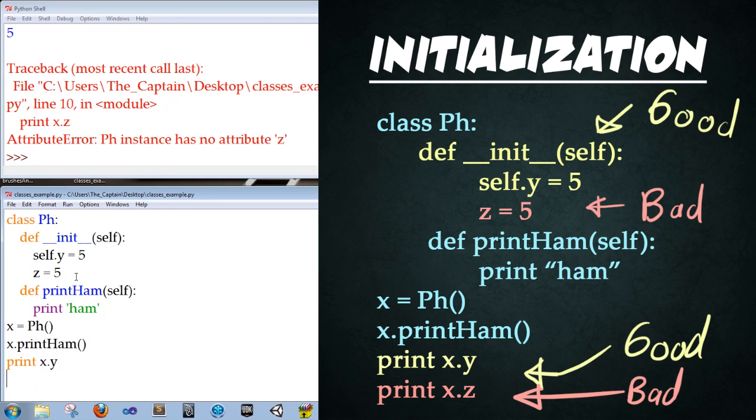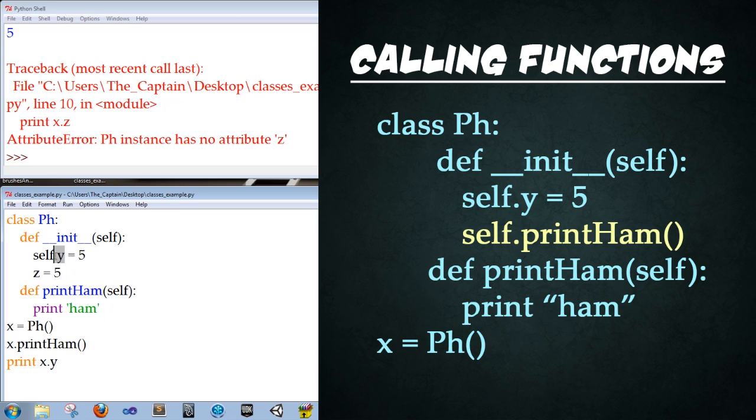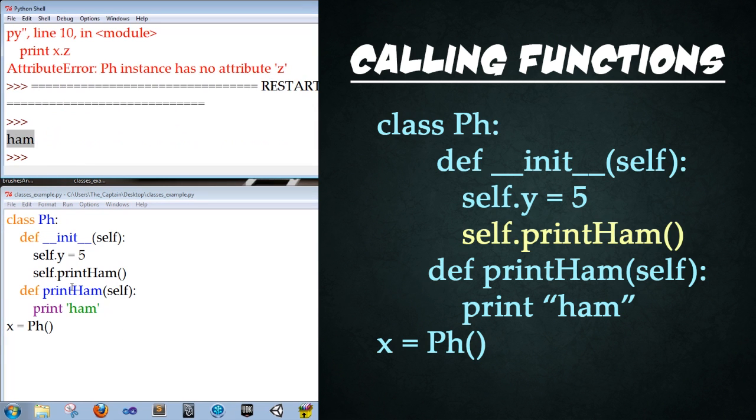So what if we wanted to access functions within other functions? Well, it's very simple. Just the same way that we can access variables within the class, we can access functions. So right here, I'm going to actually call this printHam function right here within it in the init. So we should see it as soon as it's constructed, it will call this function. So I'm going to type in self dot printHam open close parentheses. We do not need to include self within this, within the arguments. It's only within the definition of the function itself. And now I'm going to delete those final two lines so that we're only creating the class instance. We're not actually calling the function outside of itself. So go ahead and click save. And then press F5 on the keyboard to run it. Perfect. So you saw ham printed out because this function was called within the initialization or the constructor of the pH class. Perfect. Great job.